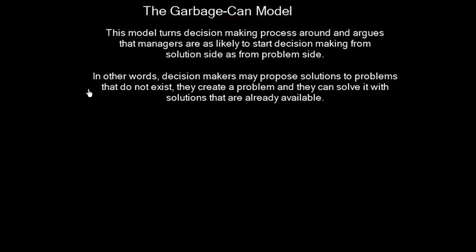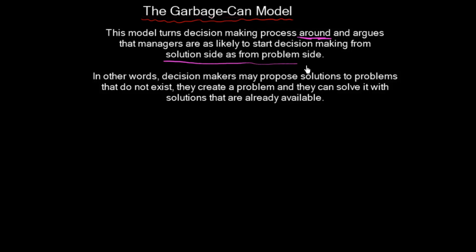When it comes to decision-making in organizations, managers can use the so-called garbage can model. This model turns the decision-making process around and argues that managers are as likely to start decision-making from the solution side as from the problem side.